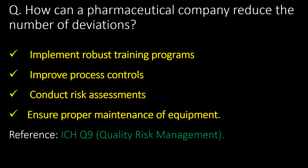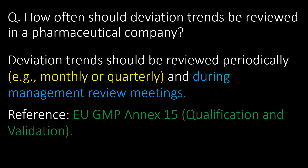How can a pharmaceutical company reduce the number of deviations? A pharma company can reduce the number of deviations by implementing robust training programs, improving process controls, conducting risk assessments, and ensuring proper maintenance of equipment. Reference: ICH Q9.